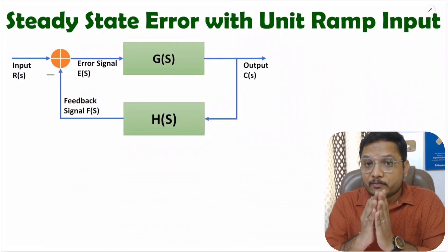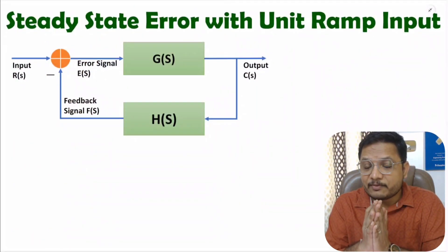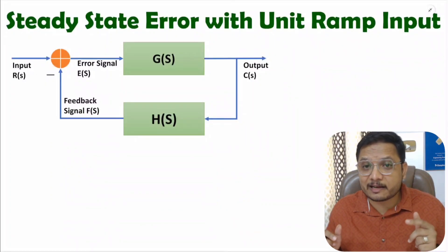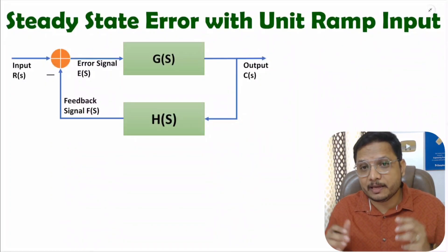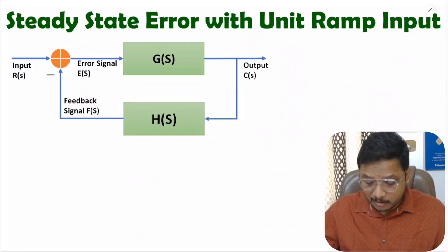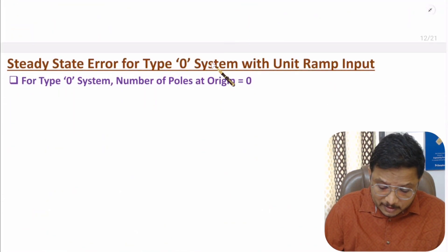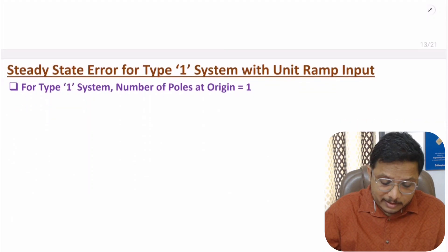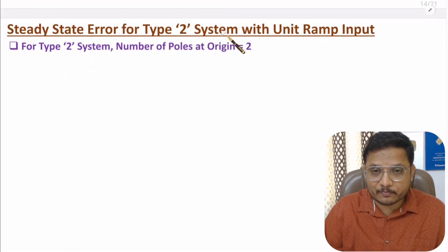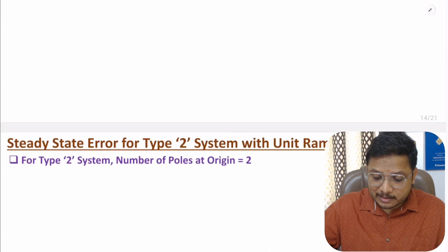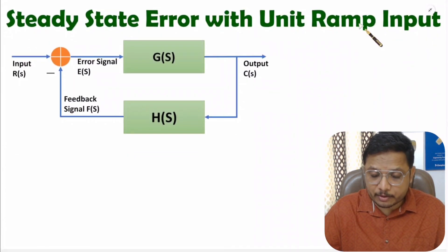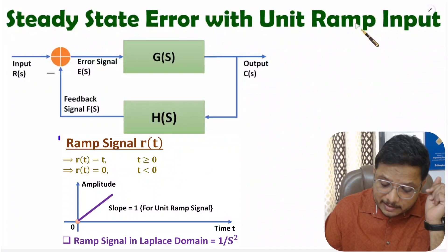Hello friends, welcome to Engineering Funder Family. In this video I will explain steady state error with unit ramp input. I will also calculate steady state error for type 0 system, type 1 system, and type 2 system. So let us identify steady state error with unit ramp input — here the input is ramp input.